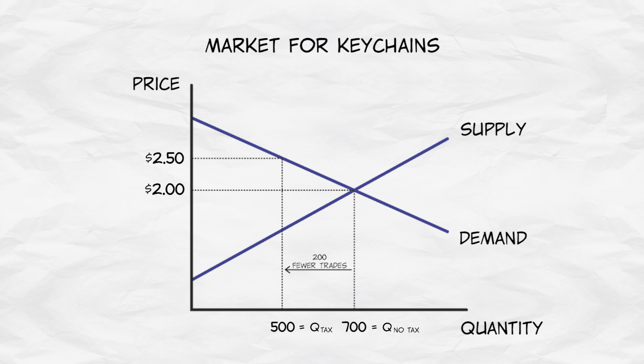So these are the 200 trades which are not made because of the tax. Before the tax, the demanders of those 200 trades valued them more than it cost the suppliers to provide the keychains. So the value of these trades is the price consumers are willing to pay, minus suppliers' cost to provide the goods, and it's given by this triangle.